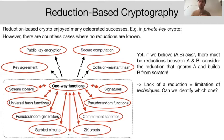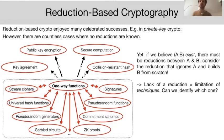Consider, for example, the following reduction: it simply ignores the one-way function and builds public encryption from scratch. So a lack of a reduction between two cryptographic primitives can be, at best, a limitation of our techniques for developing cryptographic reductions.